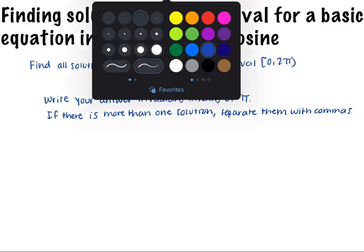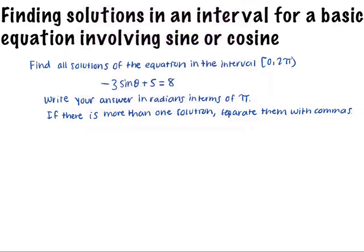Okay, so first I subtract 5 from both sides of the equation and get negative 3 sine θ equals 3. Then I divide both sides of the equation by negative 3 and write sine θ equals 3 divided by negative 3, which simplifies to sine θ equals negative 1.